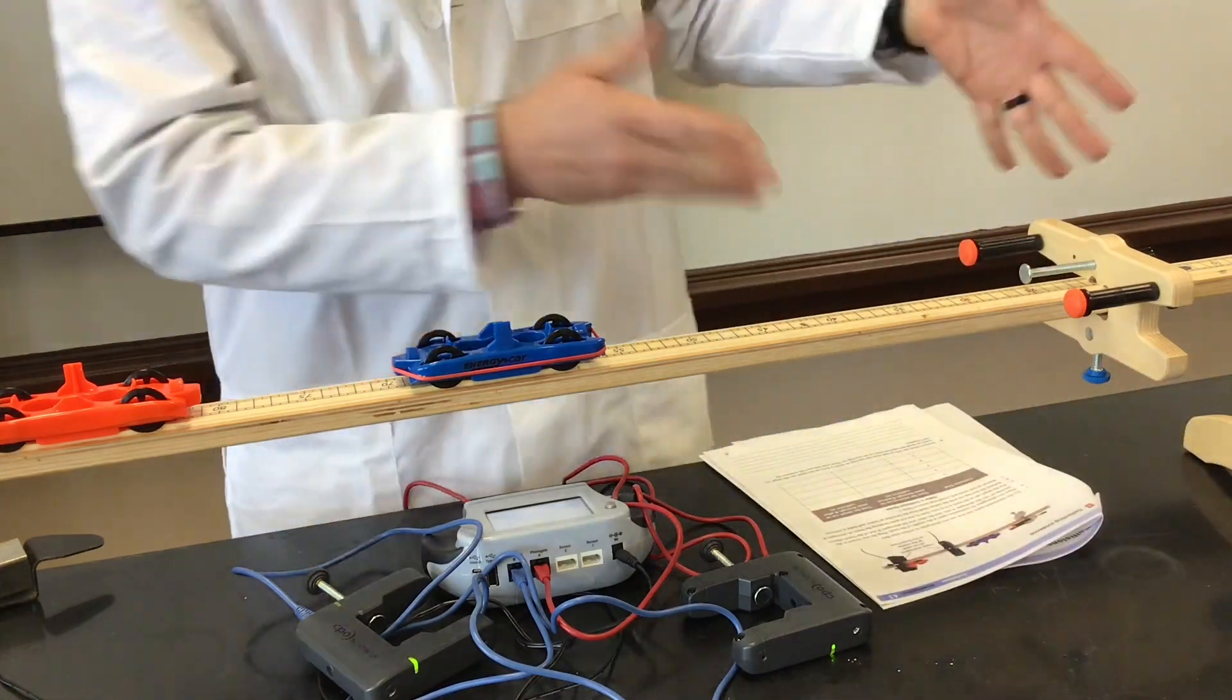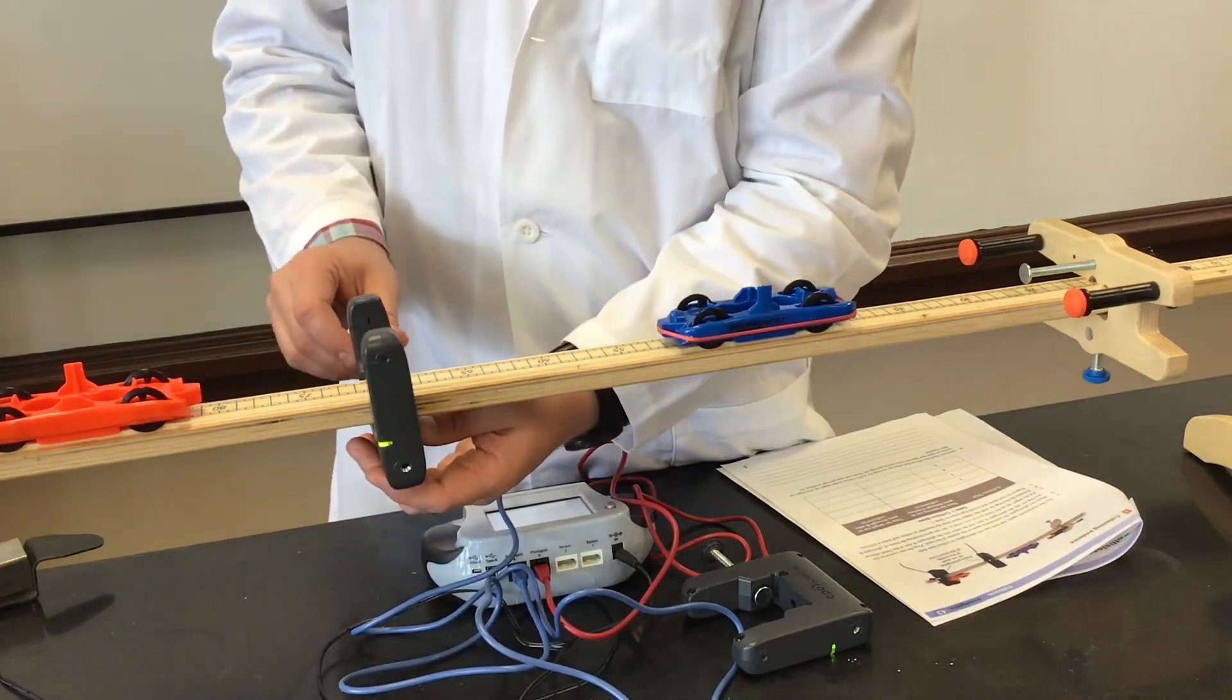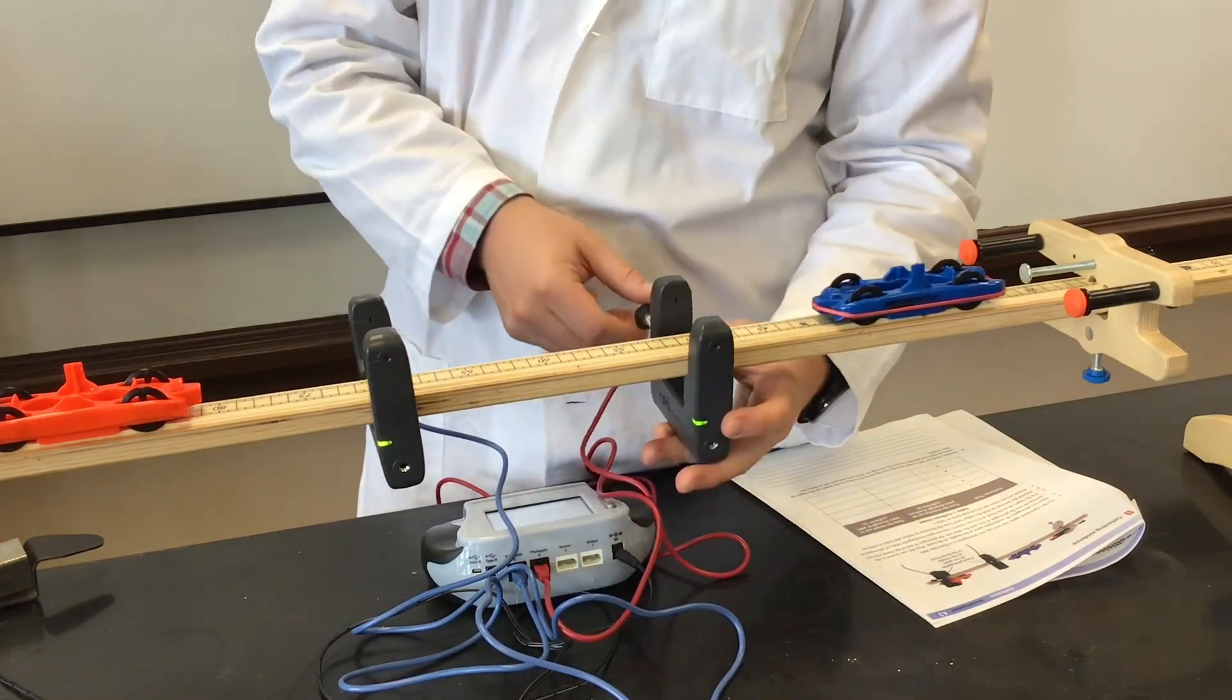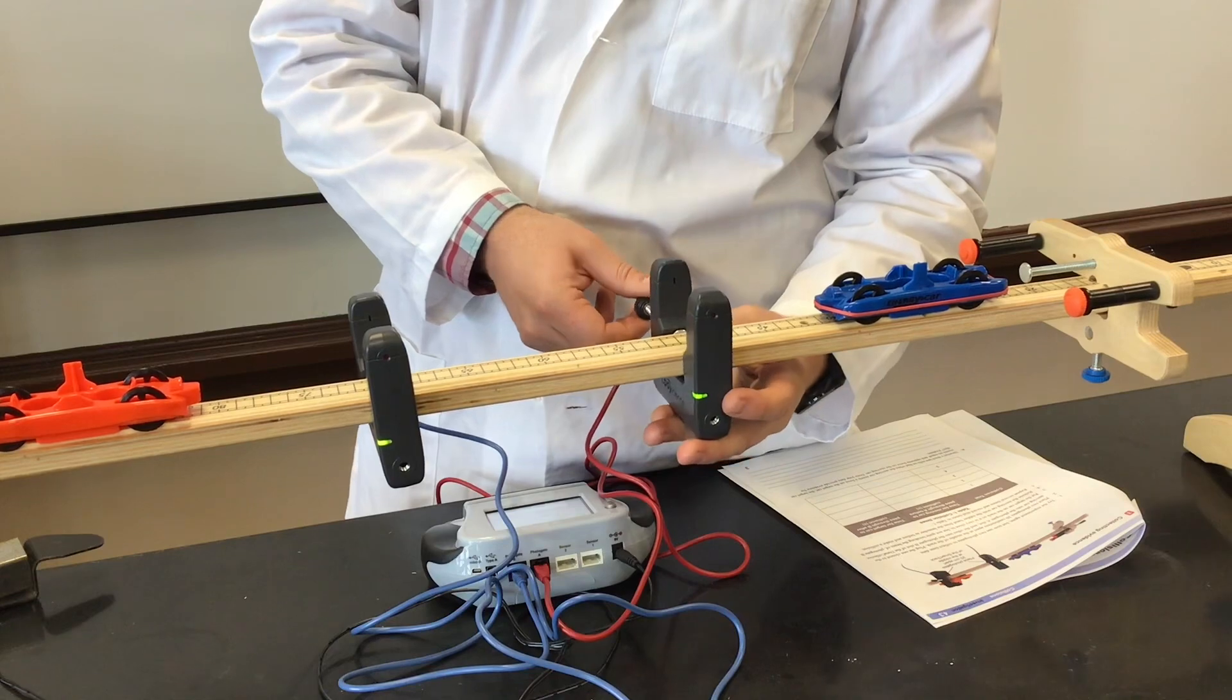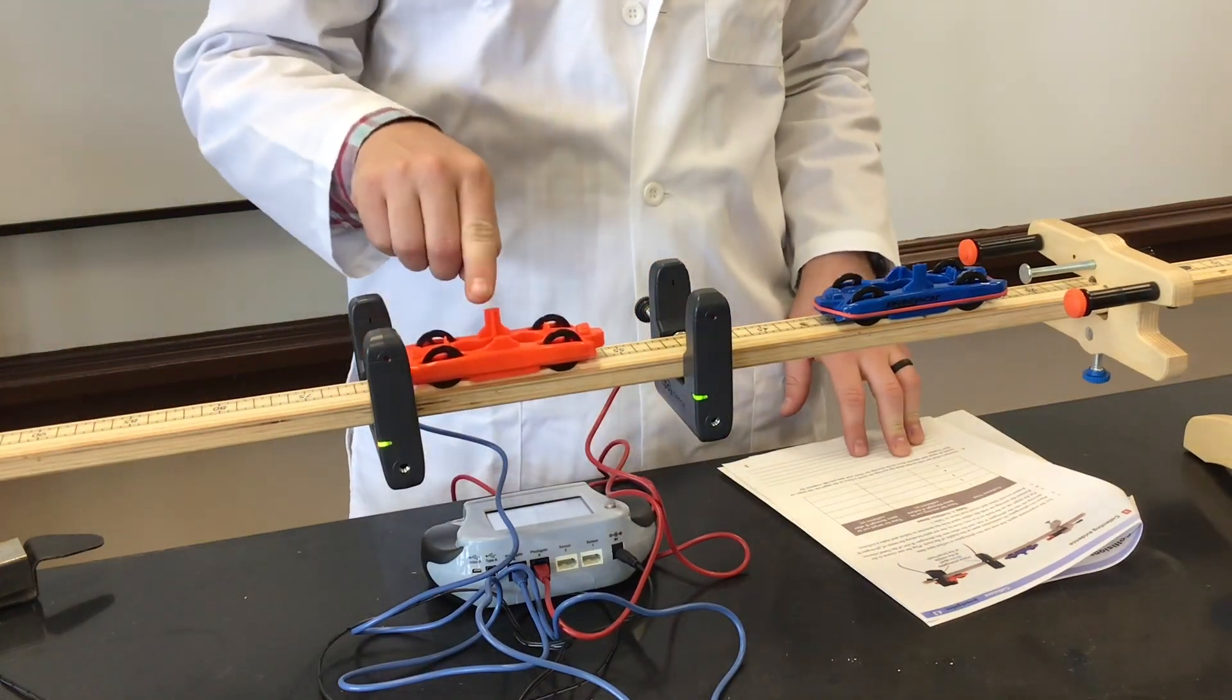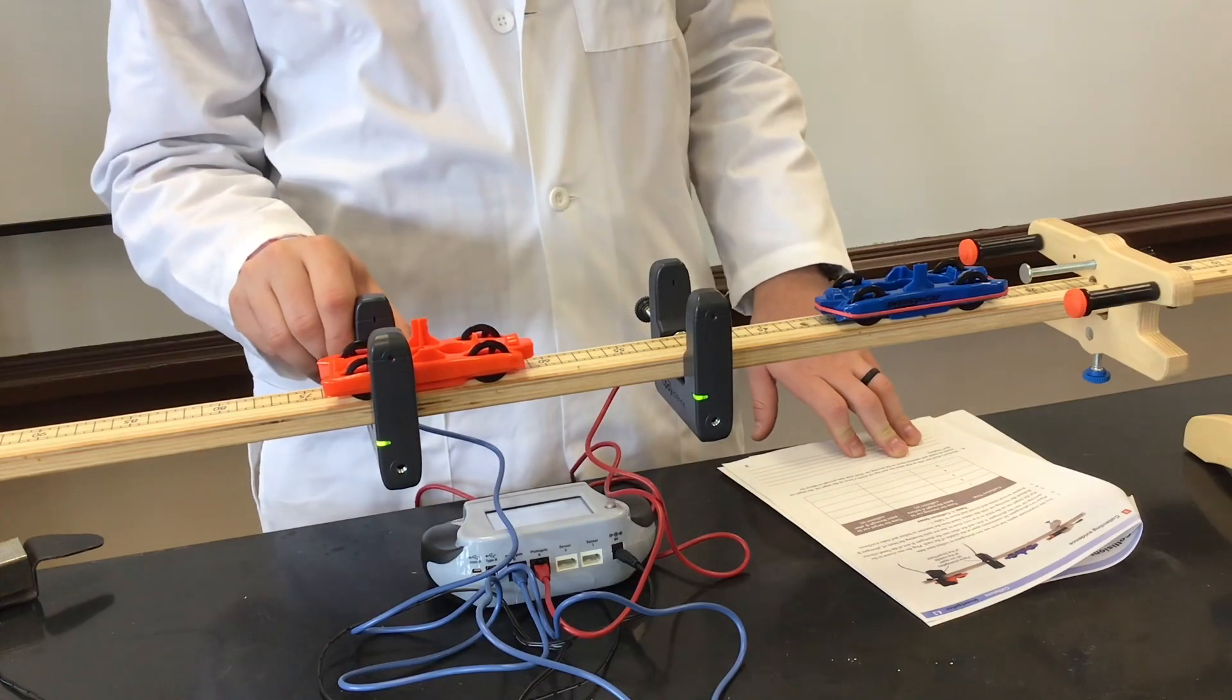After they've got some practice doing that and answered some questions, you're actually going to need the photo gates. It says place them 20 centimeters apart, so I'm placing mine at 50 and at 70, right in the middle of the track.